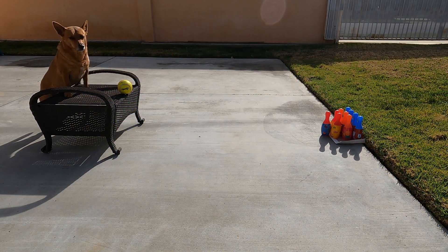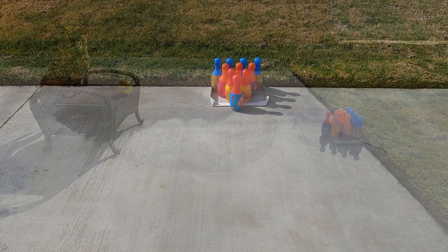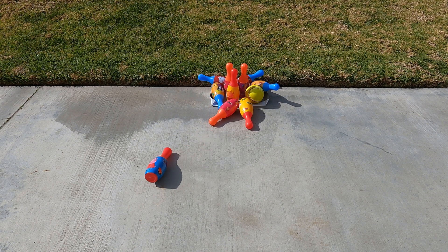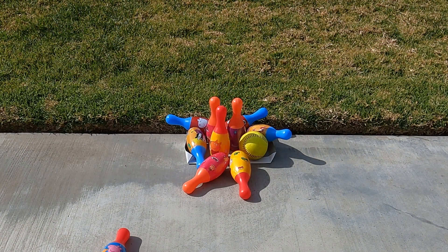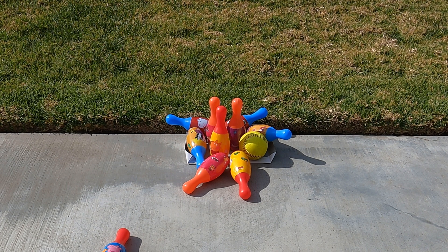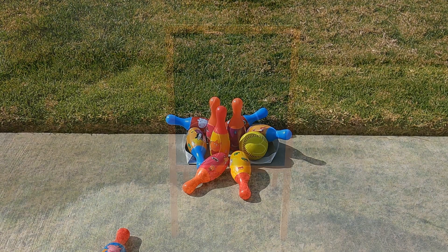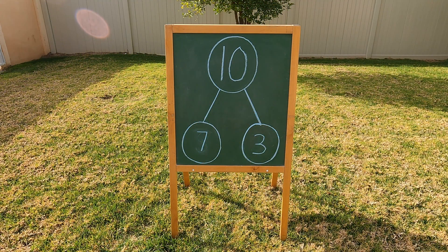Alright Professor Ginger, it's your turn again! Let's go! Hey Ginger, nice roll! Let's see how you made ten! You knocked down 1, 2, 3, 4, 5, 6, 7 — seven pins! And you left three pins standing! Seven pins knocked down and three pins left standing makes ten! Nice roll Ginger! You knocked down seven pins and only left three pins standing up! Ten is the same as seven and three!